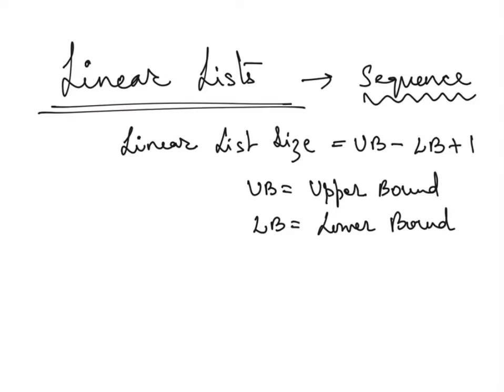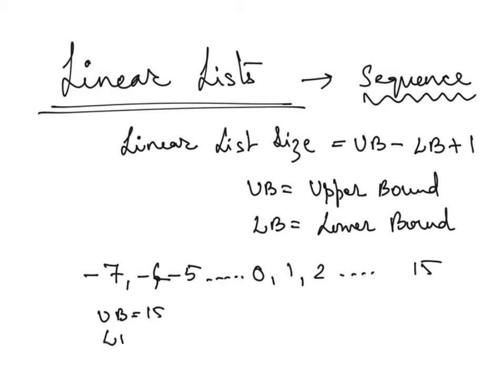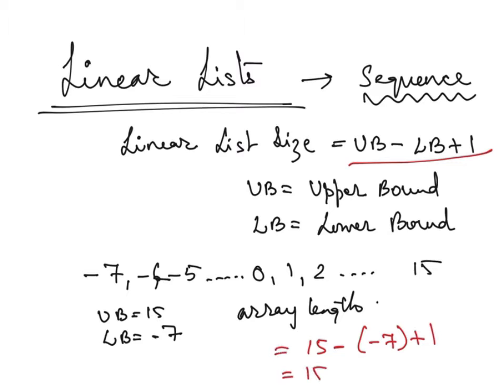Suppose there is a linear list or an array which has the elements numbered like minus 7, minus 6, minus 5, like this 0, and then 1, 2, and say 15. So now what is UB over here? UB is 15. What is LB here? The lower bound that is minus 7. And what is the array length? Just now I have told you this formula. So we will apply. What is UB? 15 minus what is LB? Minus 7 plus 1. So when you talk about it becomes 15 minus minus 7 is 15 plus 7, which is 22 plus 1, which is equal to 23. So this is a kind of linear list.